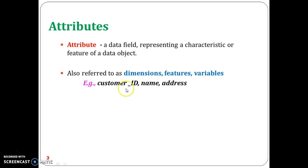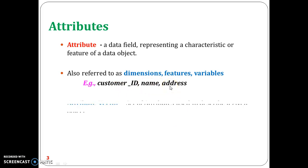For example, for the sales database we already discussed, the customer is a data object. For the customer data object, customer ID, name, and address are the various attributes.